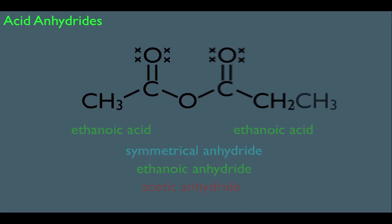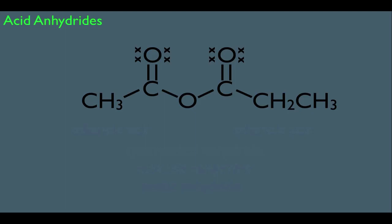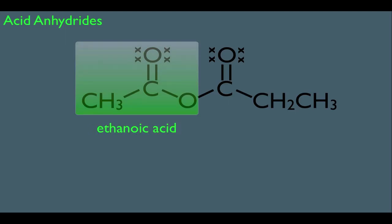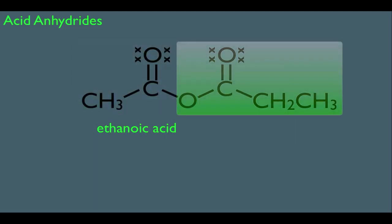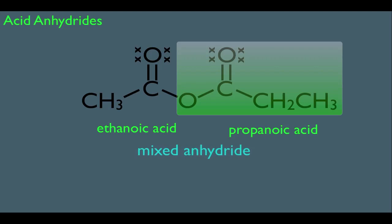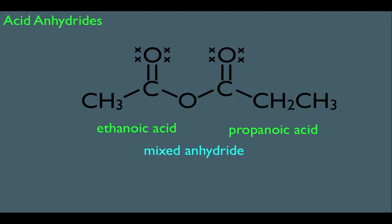However, how would you name an unsymmetrical acid anhydride? What you simply do is look at each side separately. So here on the left, if this were a carboxylic acid, it would be called ethanoic acid. An unsymmetrical anhydride is also called a mixed anhydride, and the way we would name this molecule is we would call it ethanoic propanoic anhydride. Notice the spaces between ethanoic, propanoic, and the word anhydride — we're simply calling out each side of the anhydride.